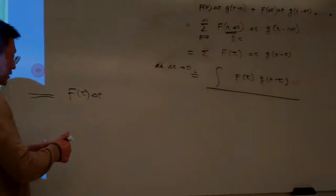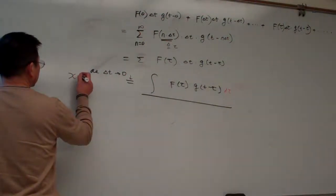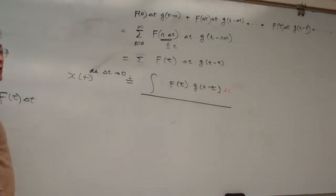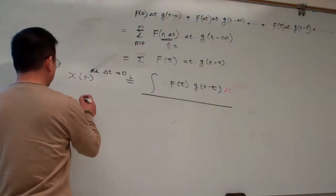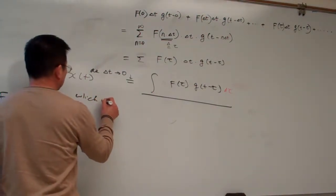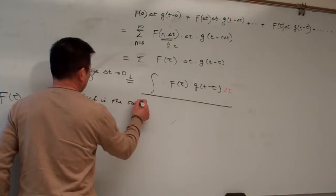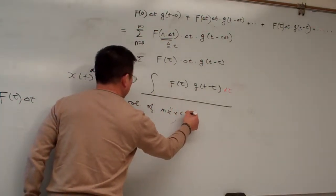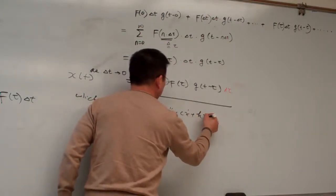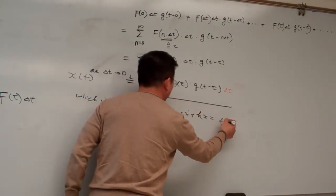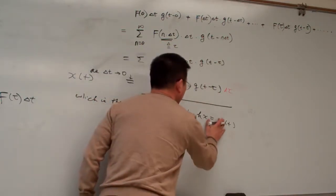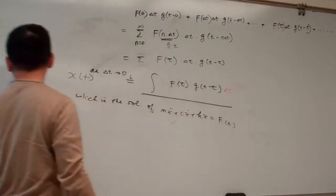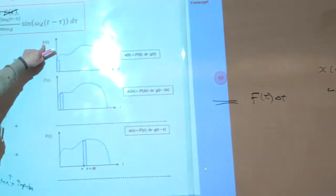So basically this one is representing the system response. That is the solutions of Mẍ + Cẋ + Kx = F(T). And here let me use capital F.